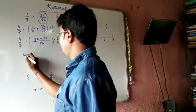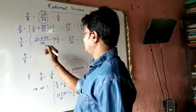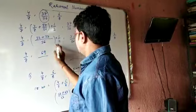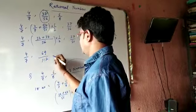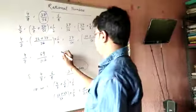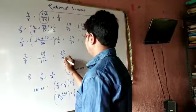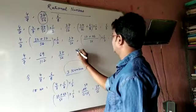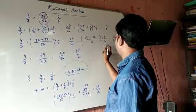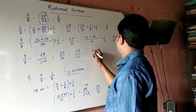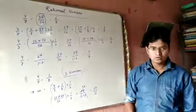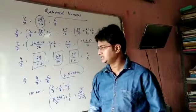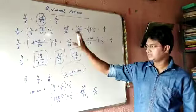Working through the calculations: the first number comes out as 69 by 112, the second number is 37 by 56, and the third number is approximately 111 by something. So this is the first number, this is the second number, and this is the third number. By this first method, we have found three rational numbers between four by seven and six by eight.